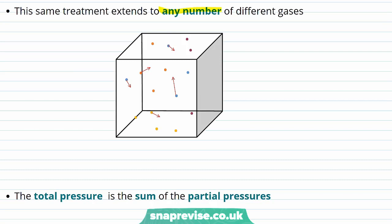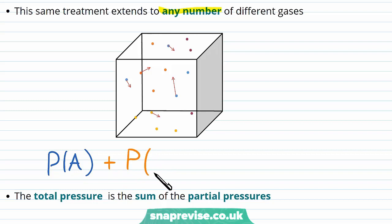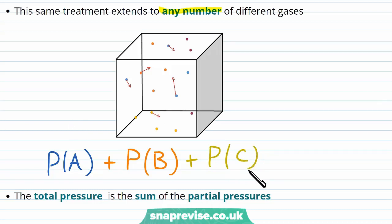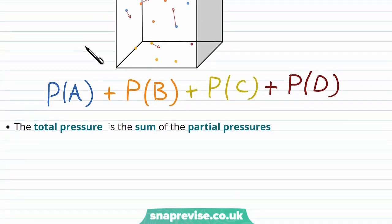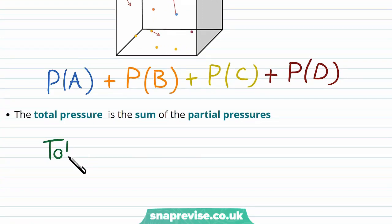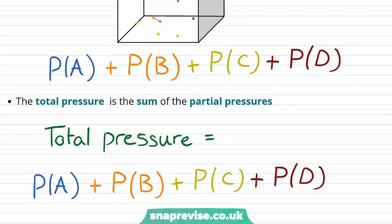In this example we've got a box with four different kinds of gas. The blue particles are gas A, with partial pressure P(A). The orange gas is species B, with partial pressure P(B). The yellow species is C, with partial pressure P(C). And finally the purpley-maroon gas is species D, with partial pressure P(D). If you want to know the total pressure in the box, it's just equal to the sum of all of the partial pressures: P(A) + P(B) + P(C) + P(D).